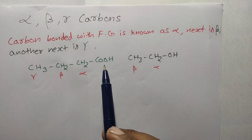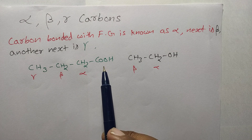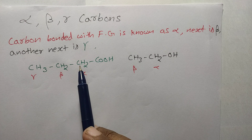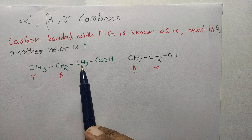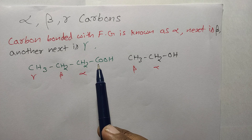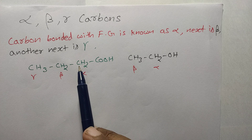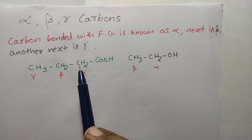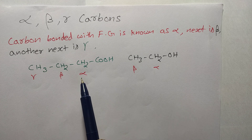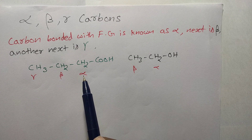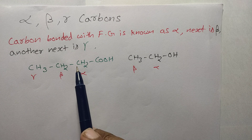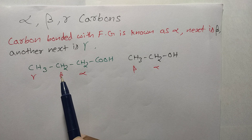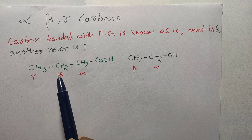Taking this example: COOH is a functional group. This carbon bonded with the functional group COOH is the alpha carbon. The next carbon is the beta carbon.